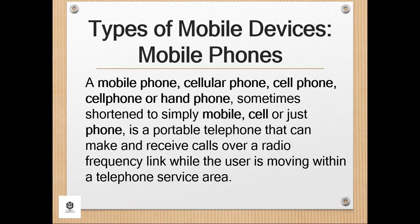Let's discuss mobile phones. A mobile phone, cellular phone, cell phone, or hand phone, sometimes shortened to simply mobile, cell, or just phone, is a portable telephone that can make and receive calls over a radio frequency link while the user is moving within a telephone service area. The radio frequency link establishes a connection to the switching systems of a mobile phone operator, which provides access to the public switch telephone network. Modern mobile telephone services use a cellular network architecture, and therefore mobile telephones are called cellular telephones or cell phones in North America.